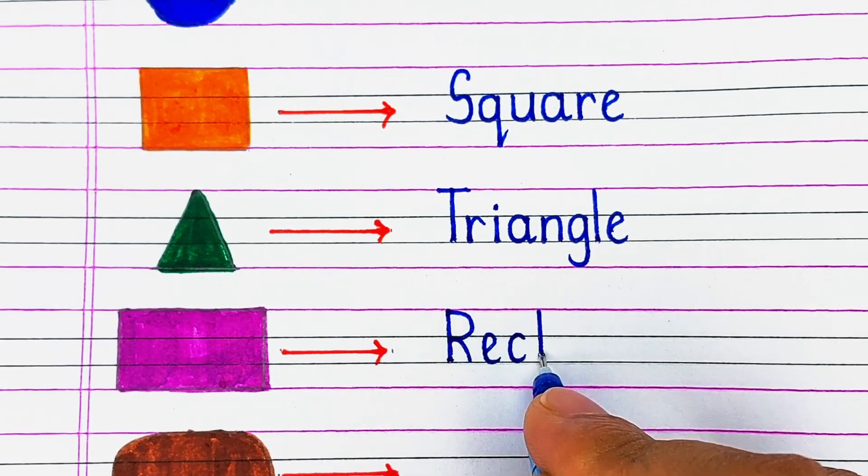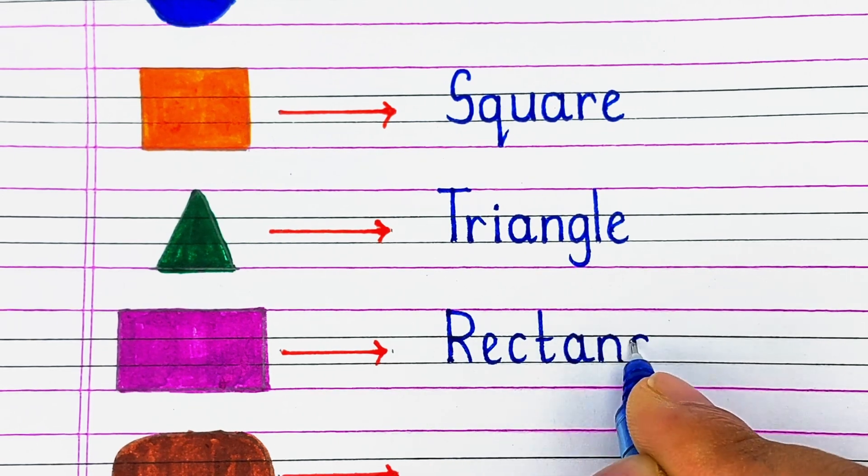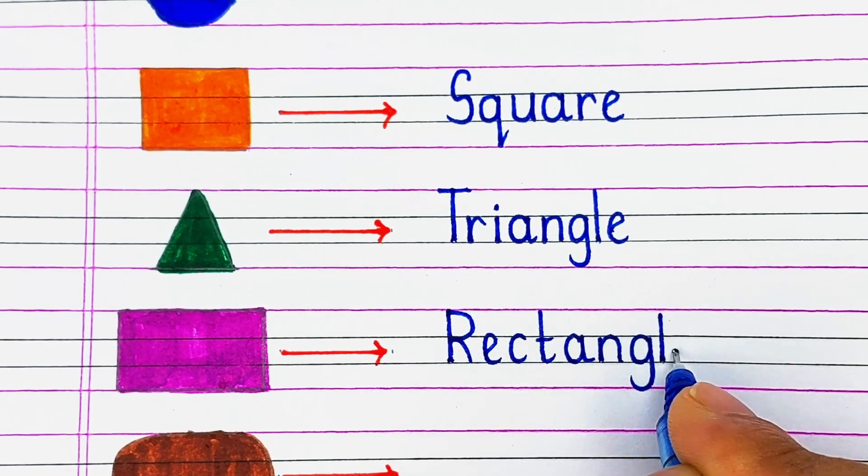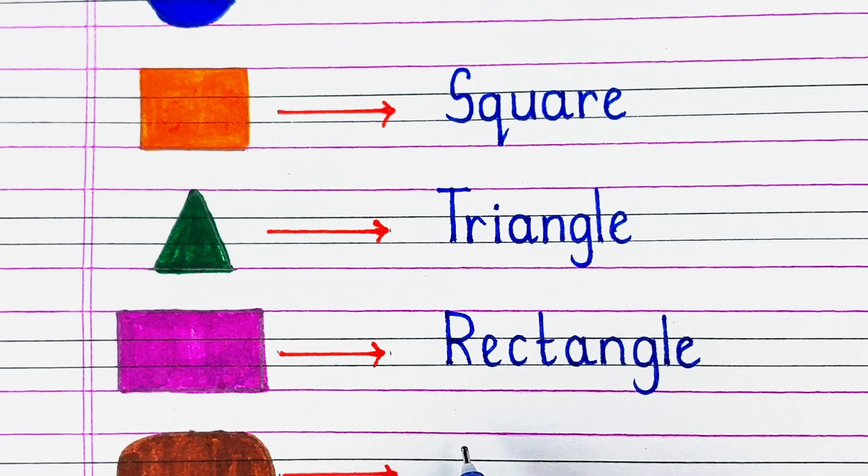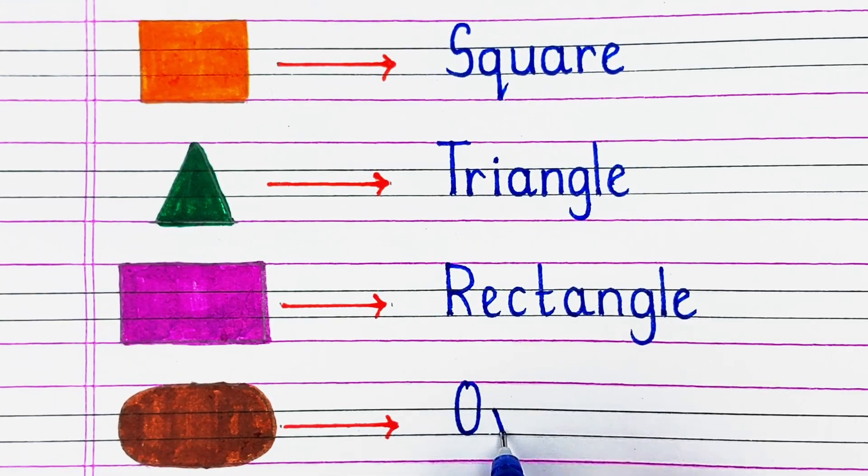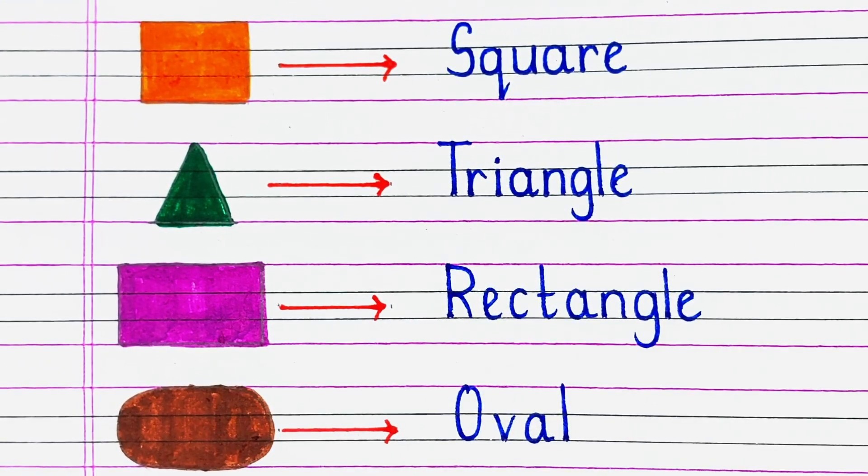Next is a shape with 4 sides in which 2 opposite sides are equal in length. It is called a rectangle.